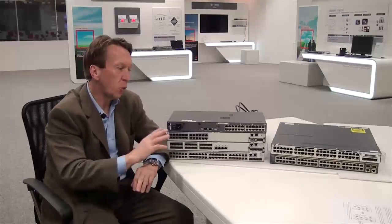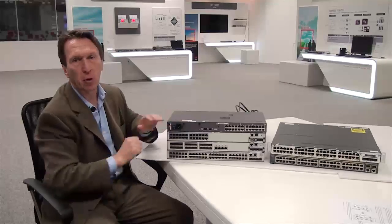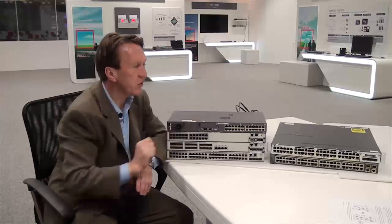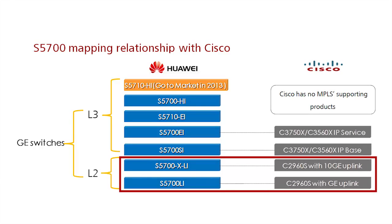Having looked at the general position these switches occupy in a network topology, let's look specifically at how the models of Huawei S5700 stack up against the Cisco models. Both Cisco and Huawei have a wide variety of switches in both the layer 2 and layer 3 environment. In the layer 2 gigabit Ethernet space, Huawei has the S5700 LI that supports gigabit Ethernet uplink ports, and the S5700 XLI that supports four fixed 10 gig uplink ports.